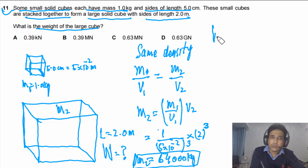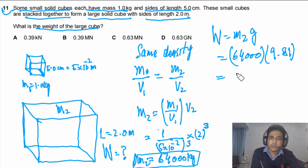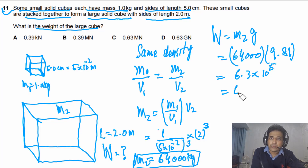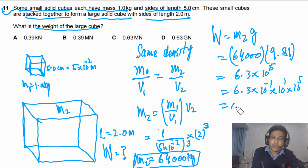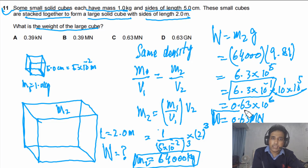Now we find the weight: W = m₂ × g = 64,000 × 9.81, which gives 6.3 × 10⁵ N. We can rewrite this as 0.63 × 10⁶ N, or 0.63 mega-newtons. That is the final answer for Question 11.